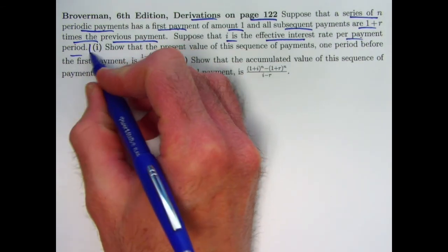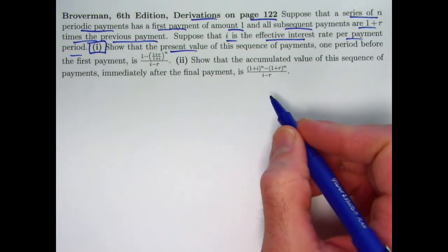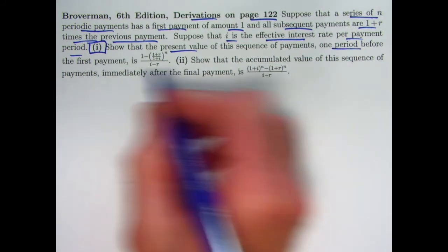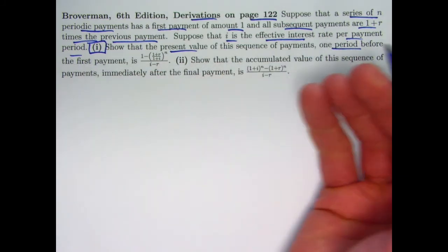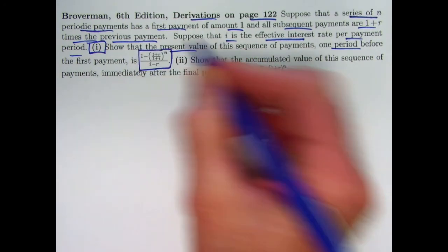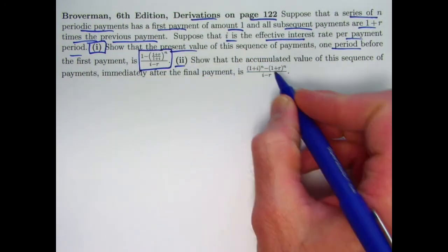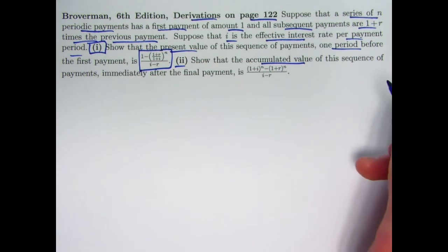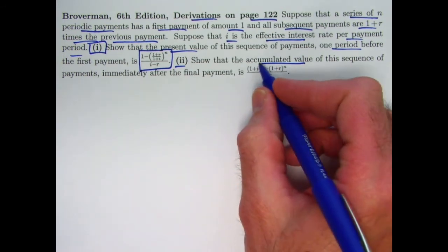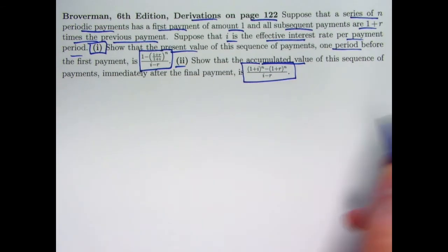Two things to do here: first, show that the present value of the sequence of payments one period before the first payment — so it's really an annuity immediate — is given by this expression. And secondly, show that the accumulated or future value of the sequence of payments immediately after the final payment is given by this expression.